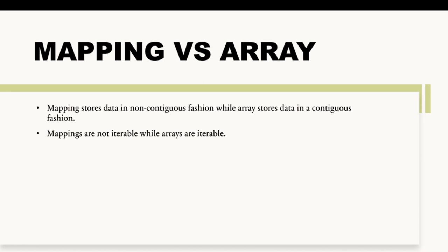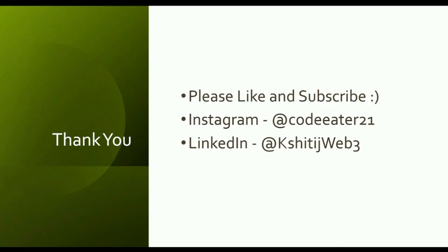To summarize: mappings store data in a non-contiguous fashion while arrays store data in a contiguous fashion. Mappings are not iterable while arrays are iterable. I hope the concept of mapping and the difference between mapping and array are now clear.